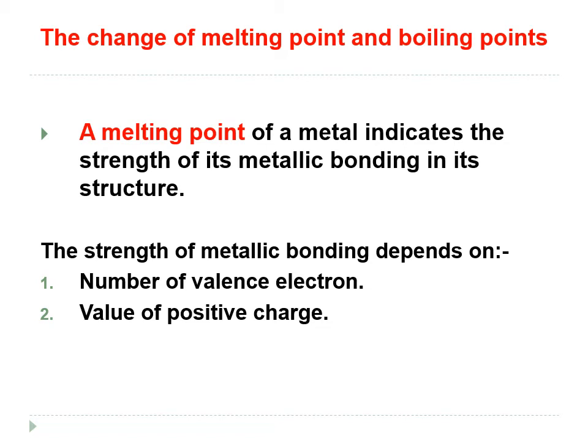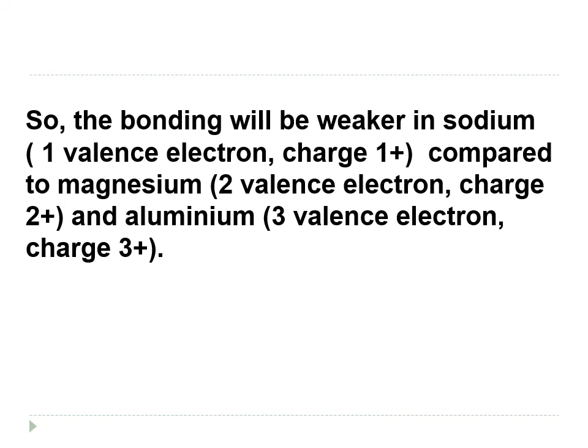The change of melting points and boiling points can be seen whereby the melting point of a metal indicates the strength of its metallic bonding in its structure. The strength of the metallic bonding depends basically on the number of valence electrons and the value of the positive charge. So the bonding will be weaker in sodium, the one we drew earlier, because it has only one valence electron and one positive charge — compared to magnesium, having two valence electrons and two positive charge. Aluminium has the highest metallic bonding strength, with three valence electrons and three positive charge.